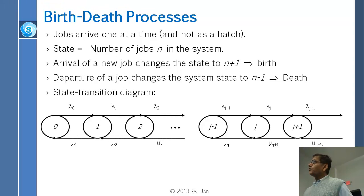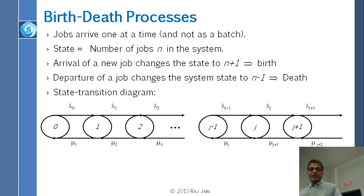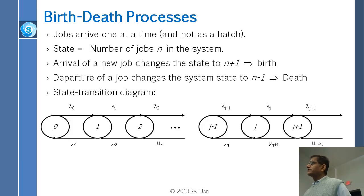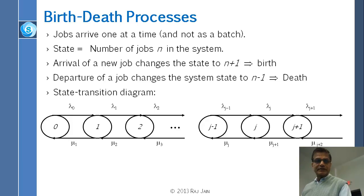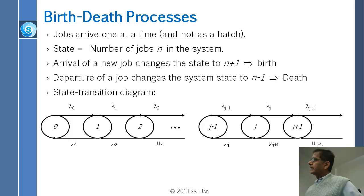Regarding the birth-death process: we remember that for each state, you could have a birth rate and a death rate — arrival and departure. There are states, and you just go to the adjacent state. If you further simplify this where the arrival rates are all the same and the departure rates are all the same, then let us first analyze this complex general case. At state j, we can see how long we stay, because we exit at rate lambda_j to the next state, or at rate mu_j to the previous state.